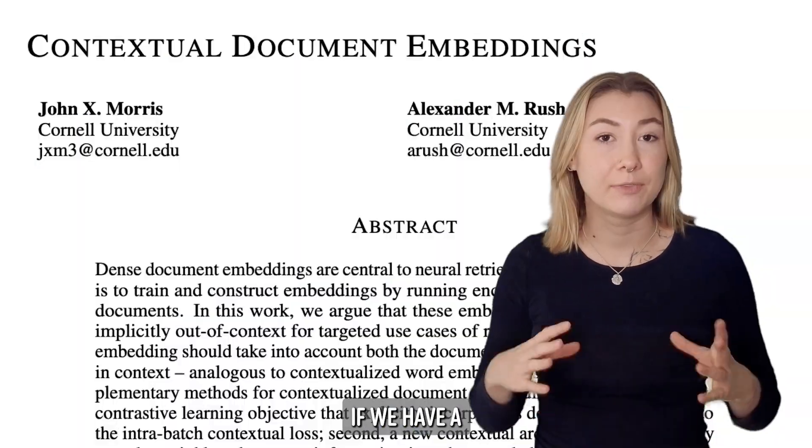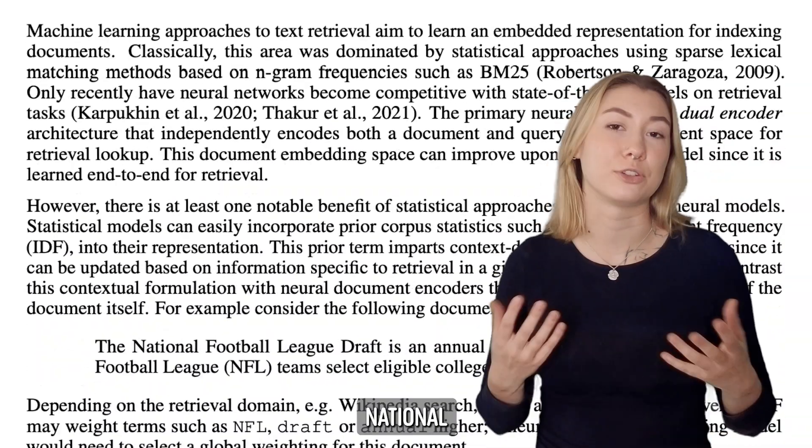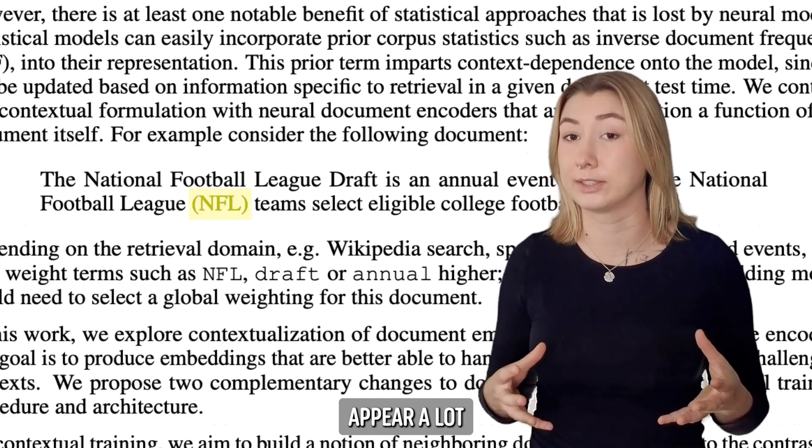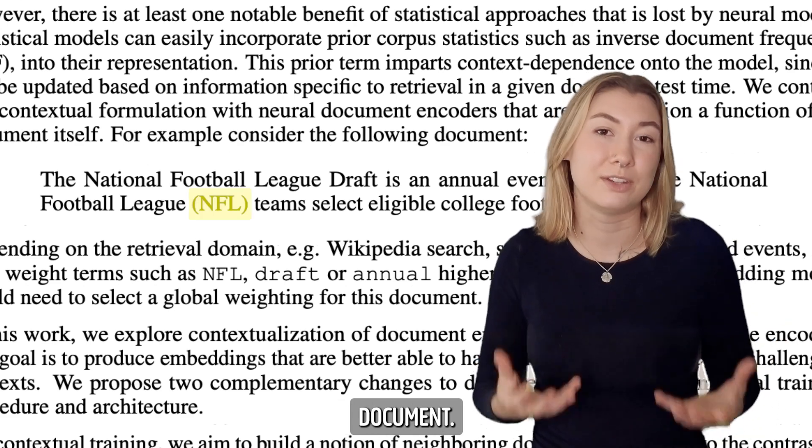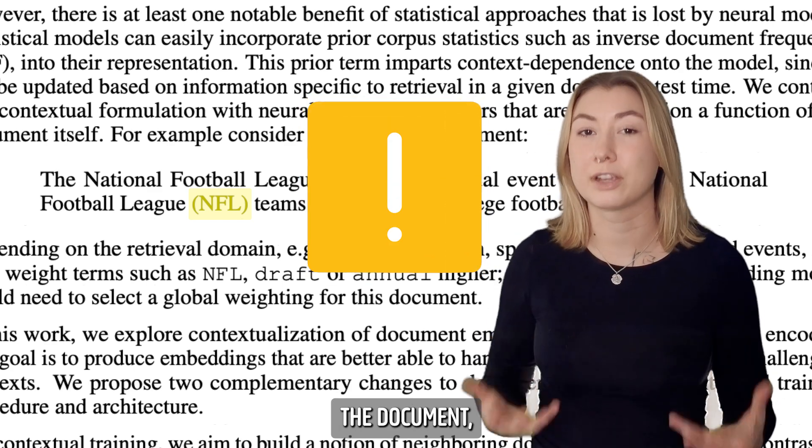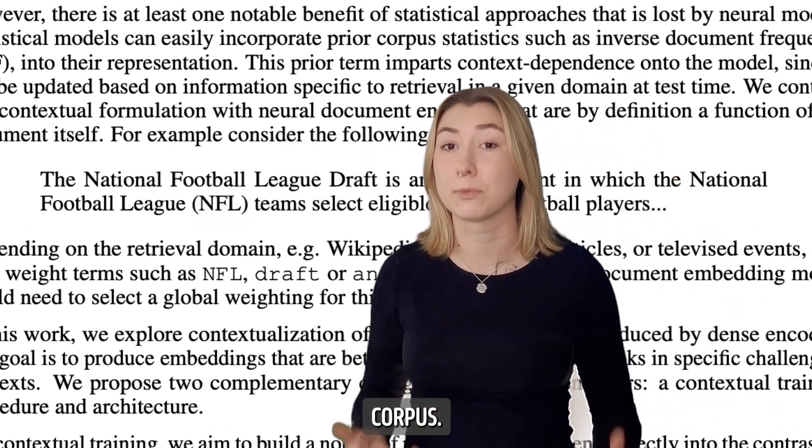What are regular dense vector embeddings missing? If we have a bunch of documents related to the National Football League, for example, the acronym NFL is going to appear a lot and not be as relatively important to the document. Regular vector embedding models will assign this term a high importance within the document, regardless of how often it appears in our entire corpus.